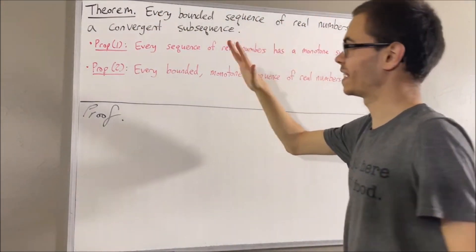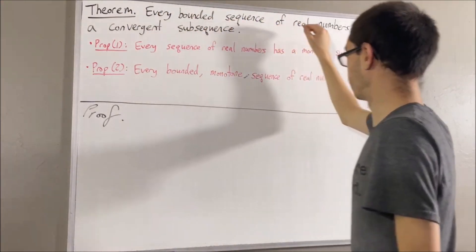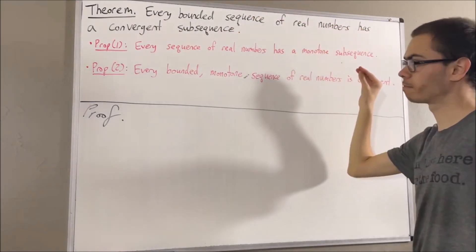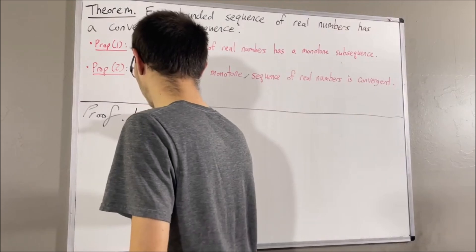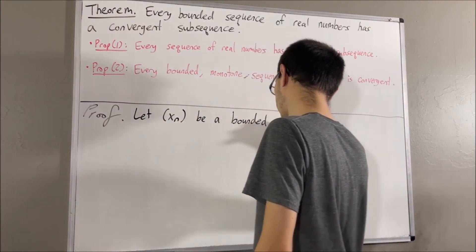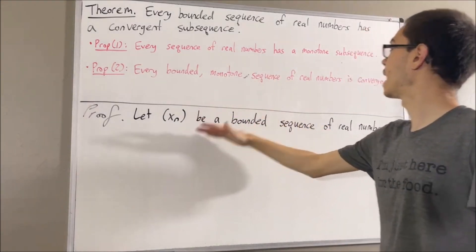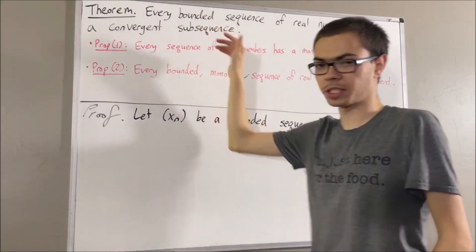Since we're trying to prove a statement about every bounded sequence of real numbers, let's give ourselves an arbitrary bounded sequence of real numbers. I'll call it xn. The whole goal is to show that xn has a convergent subsequence.